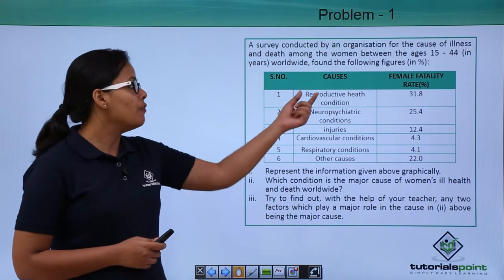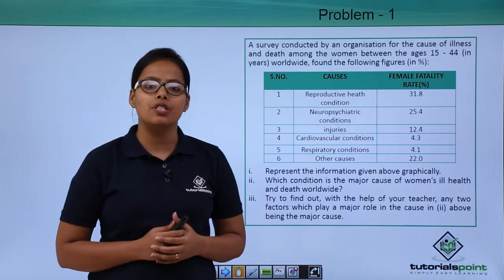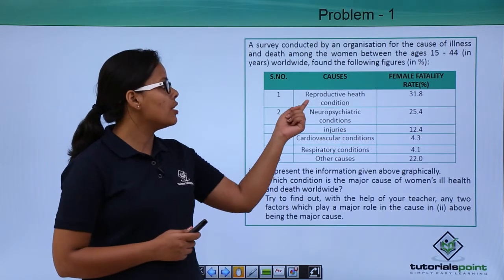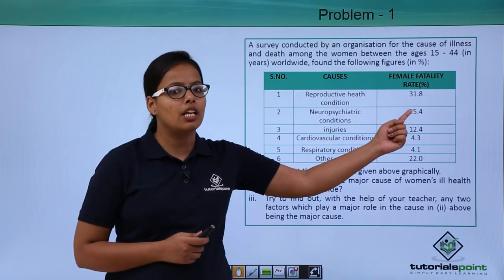You can see this table which shows the causes and the female fertility rate in percent. What are the causes? First cause is reproductive health condition, for which the female fertility rate is 31.8.